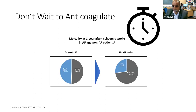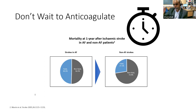The key thing once you diagnose AF is to ensure the patient is on appropriate anticoagulation. The phrase I use: don't wait, anticoagulate. At the earliest opportunity, get the patient on something. We know that strokes from AF are worse than other strokes — they tend to be fatal in about 50% of patients, compared to non-AF related strokes where that number is about a quarter.